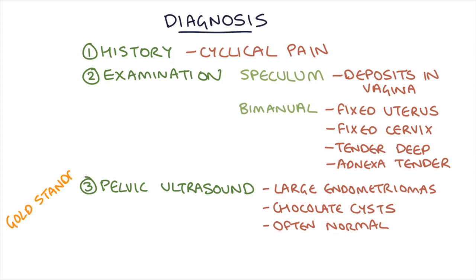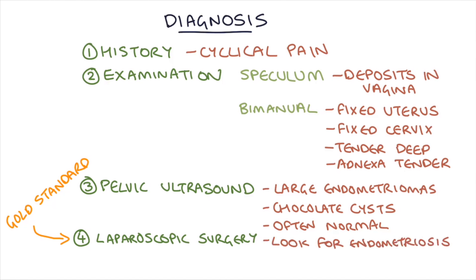The gold standard way to diagnose endometriosis is laparoscopic surgery — keyhole surgery — to look inside the abdomen and spot any areas where endometrial tissue is placed outside the uterus. The useful thing about this surgery is that if you find endometrial tissue, it's possible to put treatments in place at the same time, such as cauterizing that tissue or excising it out.